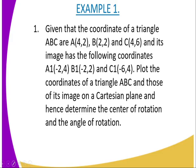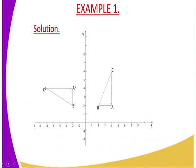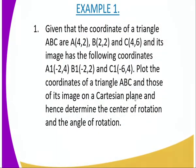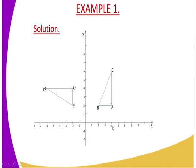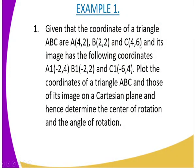Before we come to the image, we can confirm whether the coordinates of the object are well plotted. You have the coordinates A(4, 2) — you can see on this diagram, 4, 2 is here, it is well plotted. B is at (2, 2) — you can see it was plotted at (2, 2). And C is supposed to be at (4, 6), and it is well represented, it is well plotted.